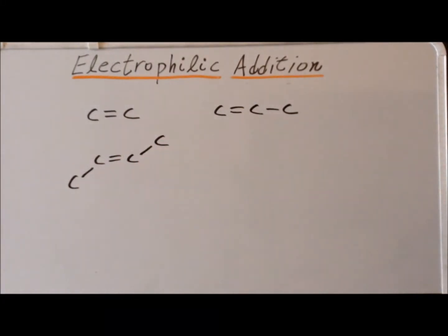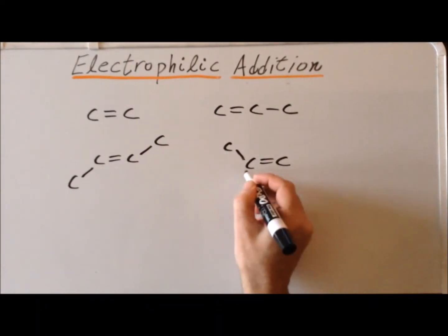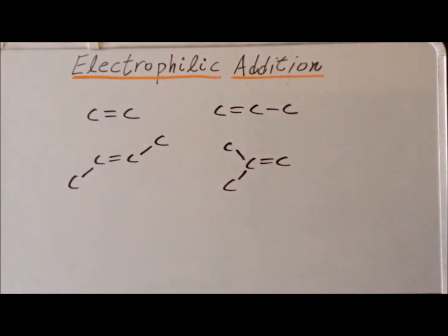Trans-2-butene and 2-methylpropene, which is also known as isobutylene. We are going to present the results of high-level electronic structure calculations, which can give us insight into details of the reaction.